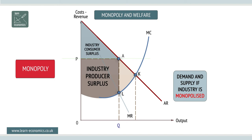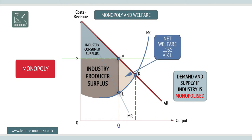Here, consumer surplus shrinks while producer surplus grows. There is a loss of consumer surplus and a net gain in producer surplus, but it is important to note that there is an overall or net welfare loss of area AKL.